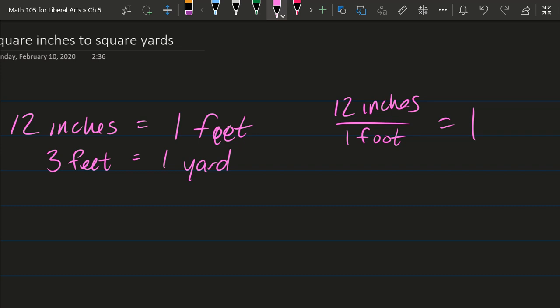I'm going to do the same thing with the second equation here. So I'm going to divide by one yard. So we have three feet per one yard and this also equals one.